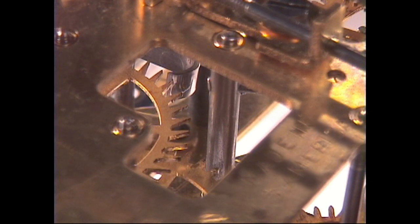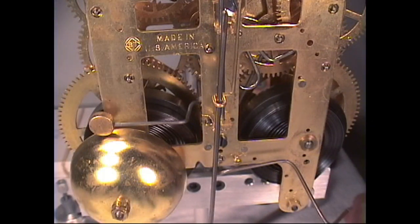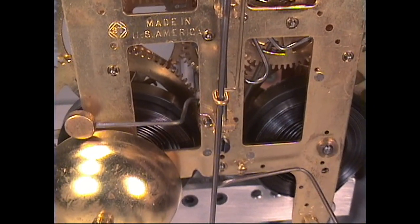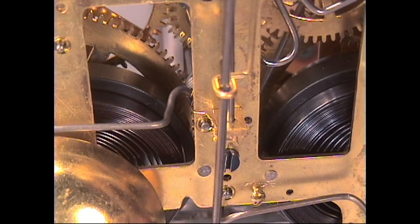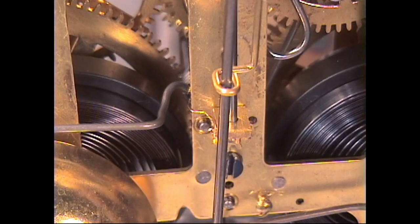Now the next thing we need to do is oil the loop, the crutch loop. And we'll go to that now. And now the last place to oil the loop where the crutch goes through. I'm going to add a little bit of oil there so it has some good lubrication.